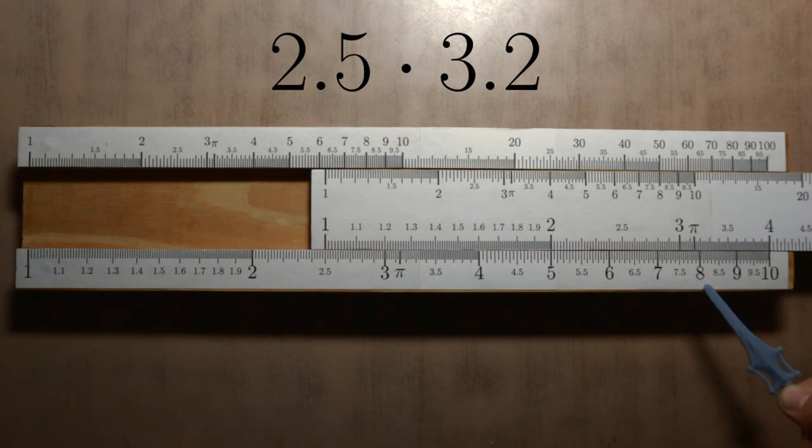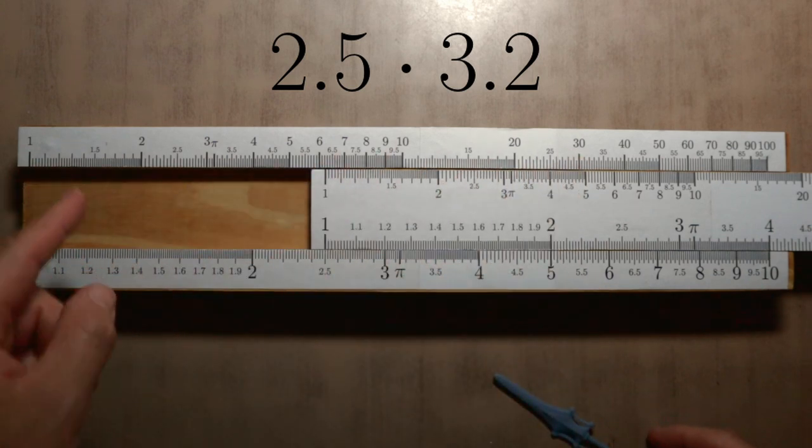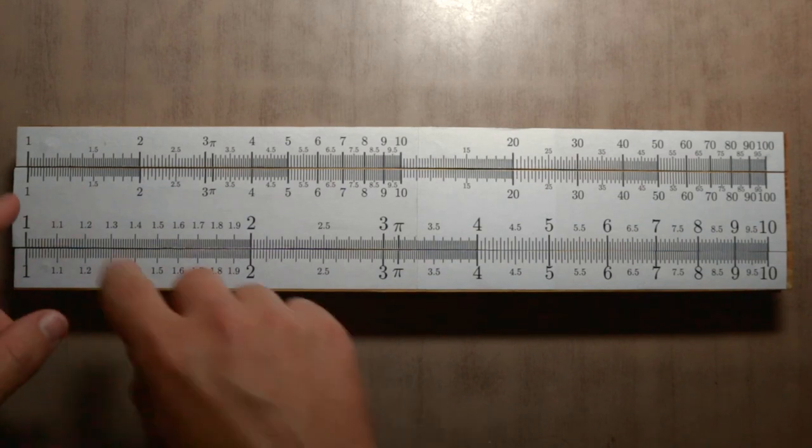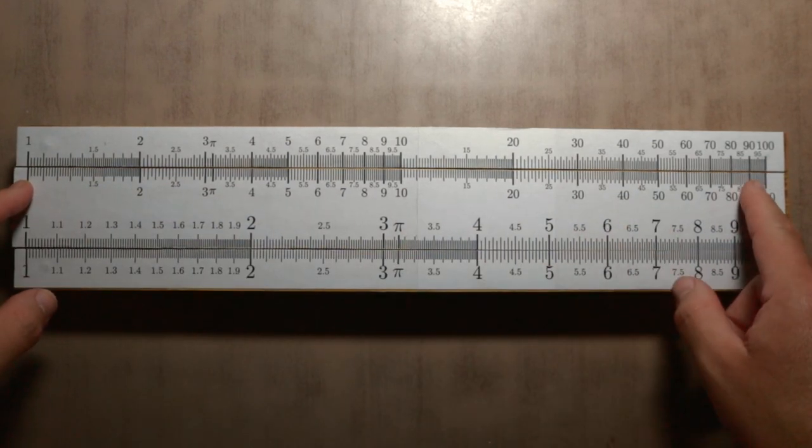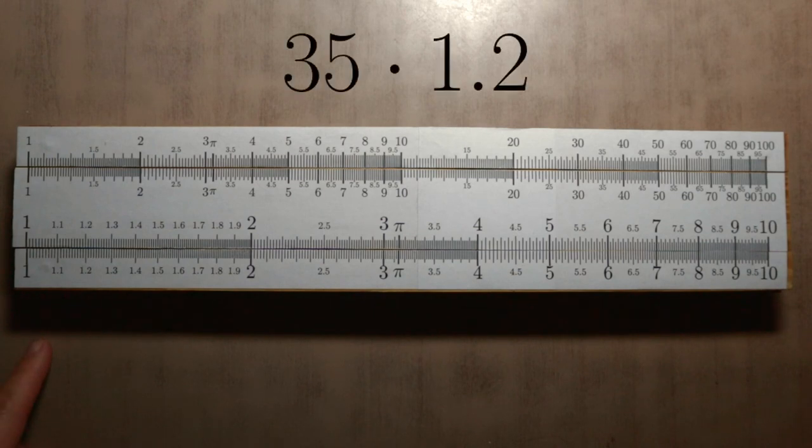This operation can also be done with the scale above, but in some cases precision is lost. Let's try multiplication with the scale above, the one that goes from 1 to 100. For example, 35 times 1.2.